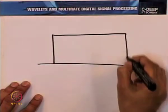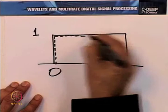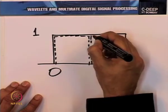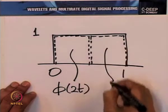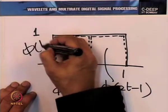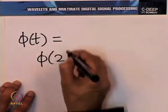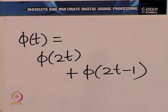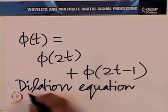What is that dilation equation? It is not difficult to determine — we can even see it graphically. If you recall, phi(t) looks like a box function, and you can redraw it to notice it has two components: the first component is phi(2t) and the second is phi(2t − 1), giving the beautiful dilation equation: phi(t) = phi(2t) + phi(2t − 1).